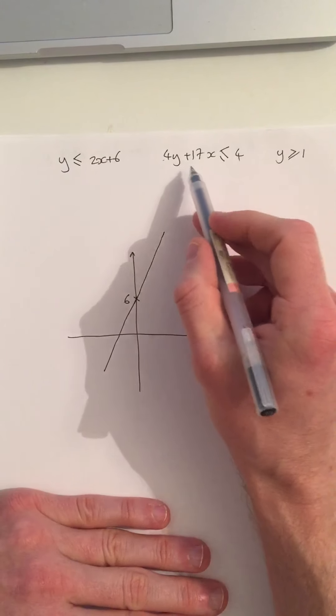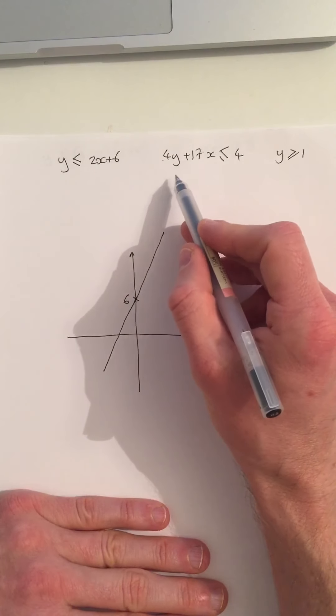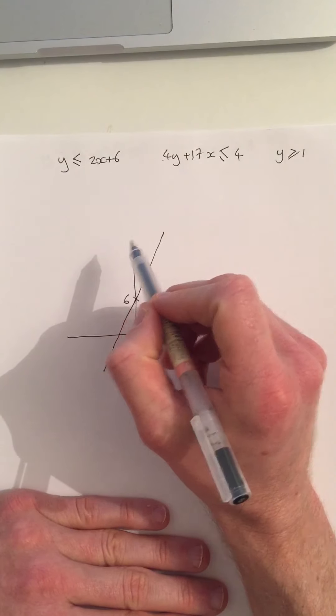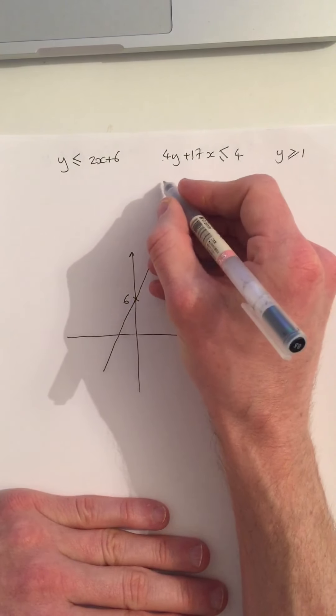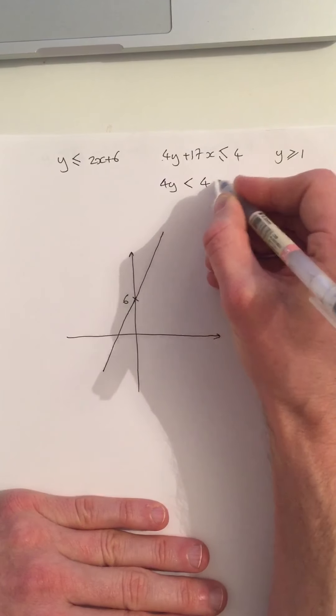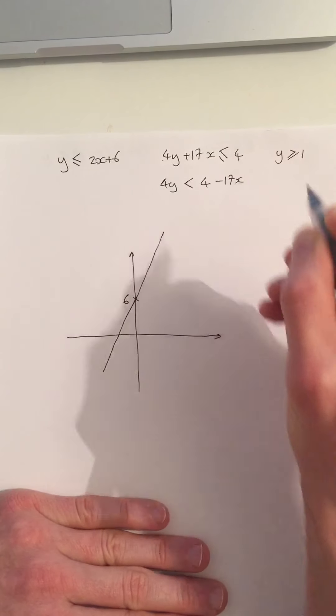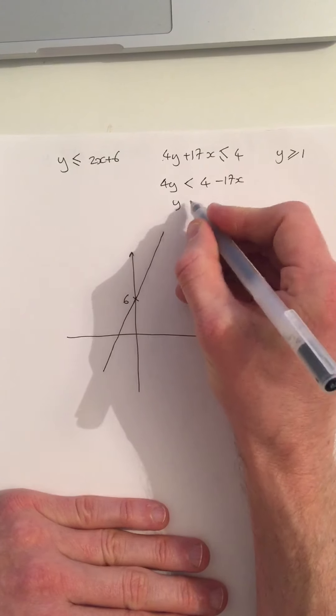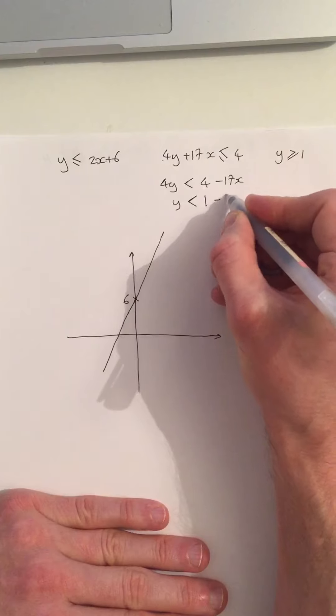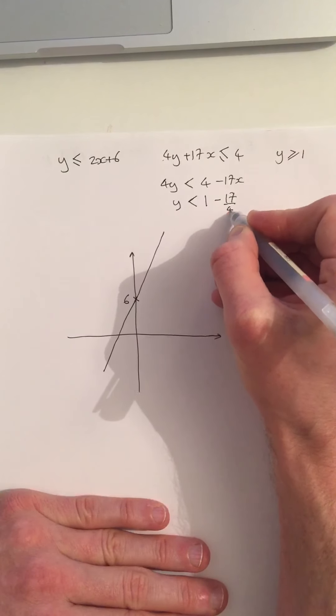To draw this one, again, it's going to be a straight line. But I want to rearrange this so it looks like the form y equals mx plus c. So first thing, take the 17x away from both sides. And now divide through by 4. So 4 divided by 4 would be 1. And 17 divided by 4, I'll just write that as 17 over 4.